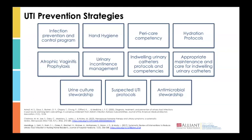Structured drink rounds could have significant impact in reducing UTI rates and subsequent hospitalizations related to UTIs and urosepsis. Atrophic vaginitis prophylaxis — the use of vaginal estrogens — has demonstrated effectiveness in preventing UTIs among postmenopausal women. Also consider urinary incontinence management, indwelling urinary catheterization protocols and competencies, appropriate maintenance and care for indwelling urinary catheters, and urine culture stewardship.